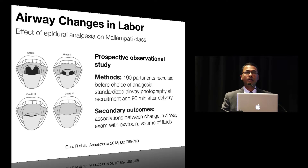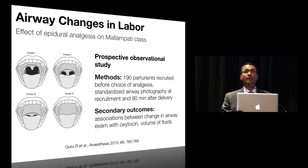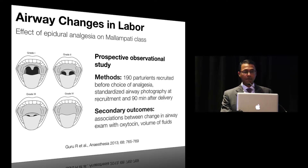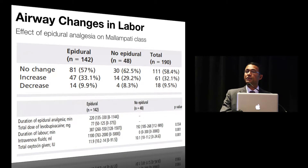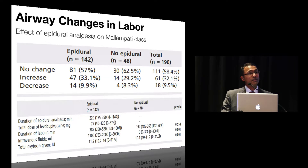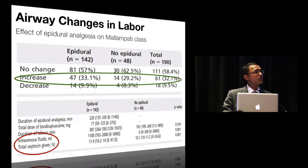This was a prospective observational study involving about 190 parturients recruited before the choice of analgesia. They used standardized measures for airway photography both at recruitment and about 90 minutes after delivery. The primary outcome was to see if epidural analgesia would change airways. There was no difference between the epidural and non-epidural groups — the airway worsened in about 30 to 35% of parturients in both groups. Though patients in the epidural group received more IV fluids and more oxytocin, these two factors were not correlated with the airway change.